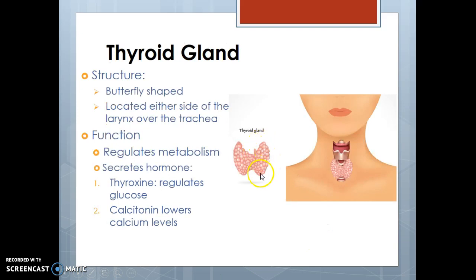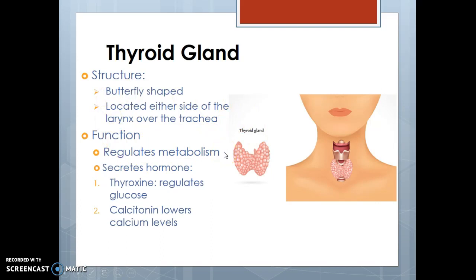The thyroid gland is interesting. It's right over the trachea, located right under the larynx or voice box, in a butterfly shape. The thyroid plays an important role in metabolism — how much you weigh, whether you can lose weight, how much weight you're gaining. That's why when people have excessive weight gain, they'll go have their thyroid checked. The two hormones important to remember are thyroxine, which regulates glucose in our body, and calcitonin, which helps lower calcium levels.